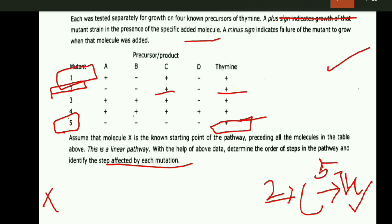In the case of mutant 1, there is growth in A, C, and thiamine. That's why mutant 1 is placed before A, C, and thiamine. C and thiamine are already mentioned, so A is found here, and mutant 1 is found here.